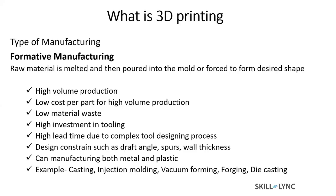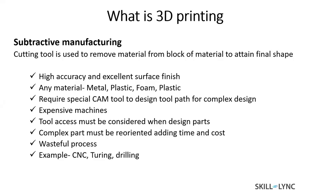The next manufacturing method is subtractive manufacturing, where you have a cutting tool, you start with a block of your raw material, you start to cut the raw material from it, and then you attain your final shape. Examples are CNC, turning, drilling, and lathe.